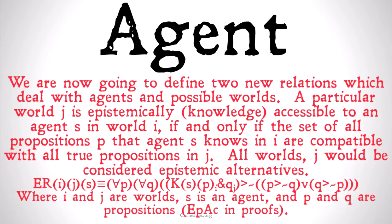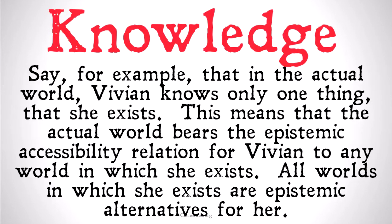For example, say that in the actual world, Vivian knows only one thing: that she exists. This means the actual world bears the epistemic accessibility relation for Vivian to any world in which she exists. All worlds in which she exists are epistemic alternatives for her.